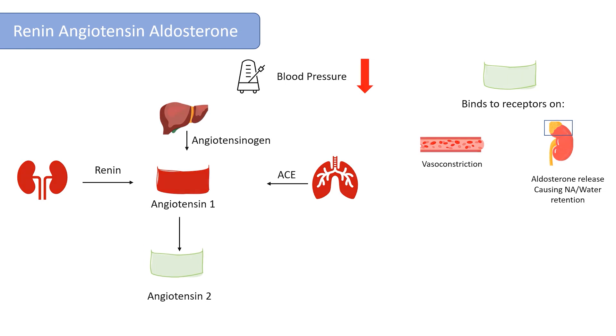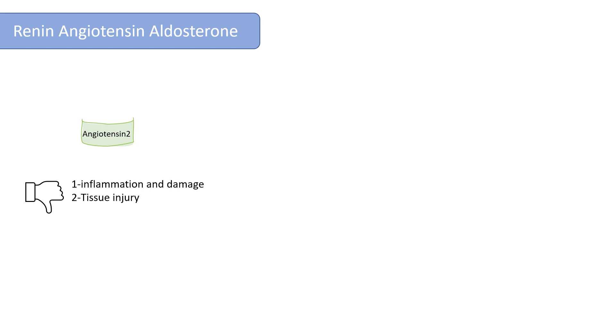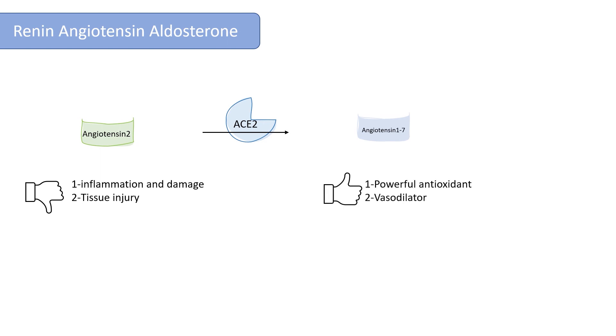But angiotensin-2 also increases inflammation and damage to blood vessel linings and causes various types of tissue injury. Angiotensin-converting enzyme 2 is responsible for metabolizing angiotensin-2 and converting it to other molecules that counteract its harmful effects — for example, angiotensin-1-7, which is a powerful antioxidant and vasodilator.